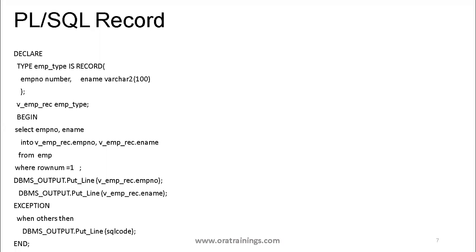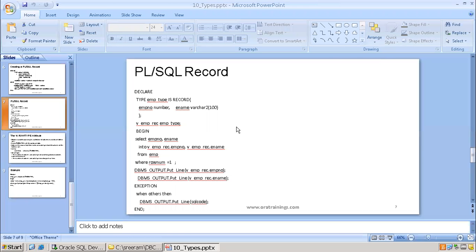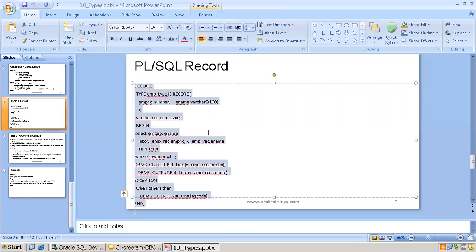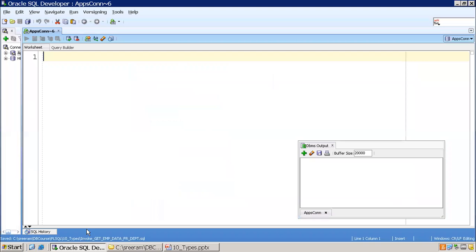We also have another example. Here, I have a variable TYPE EMP_type IS RECORD holding two columns. I declared a variable V_EMP_rec of type EMP_type. In the begin section, we have written an implicit cursor which fetches the data, and then we simply display it. Let us work on this particular sample, and later we'll see a sample based on a package for more understanding.